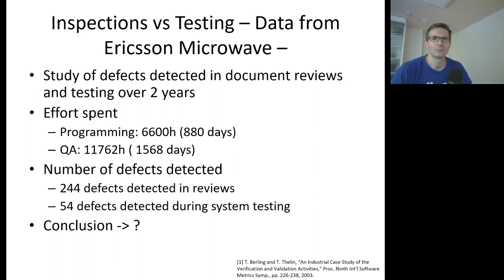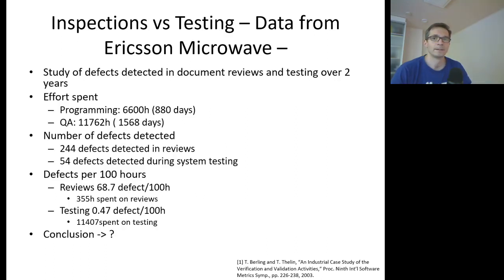But some of you may be wondering, shouldn't we include more data into the analysis? Is there a particular piece of data that might be missing here? Indeed, a very important piece of information was missing from the previous slide — the slide did not include efforts spent on reviews or software testing. Now we have added the information on the time spent for reviews and testing, and we can compute how many defects were detected per 100 hours of each quality assurance technique performed.